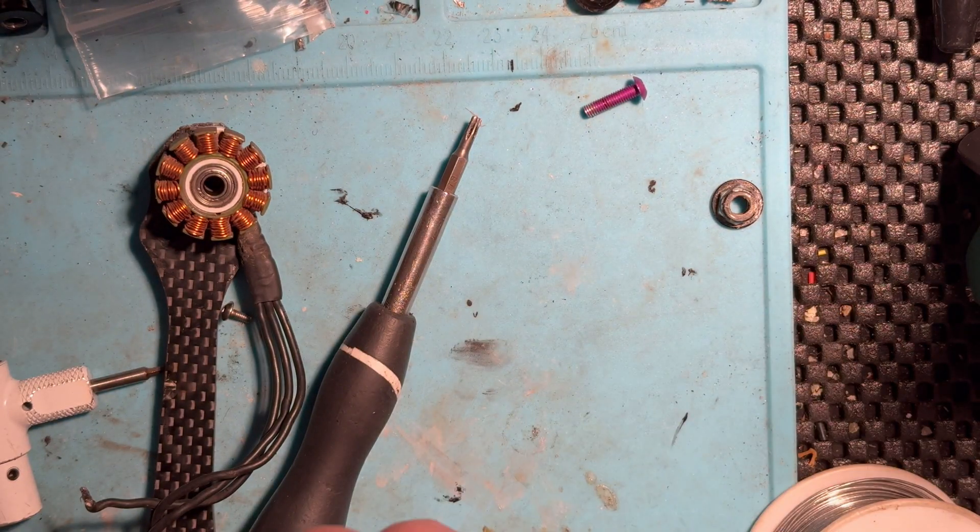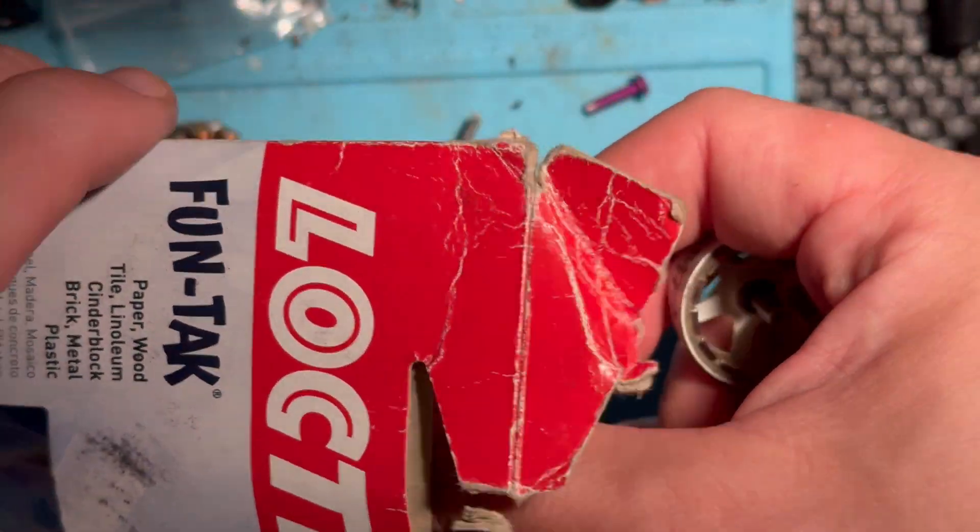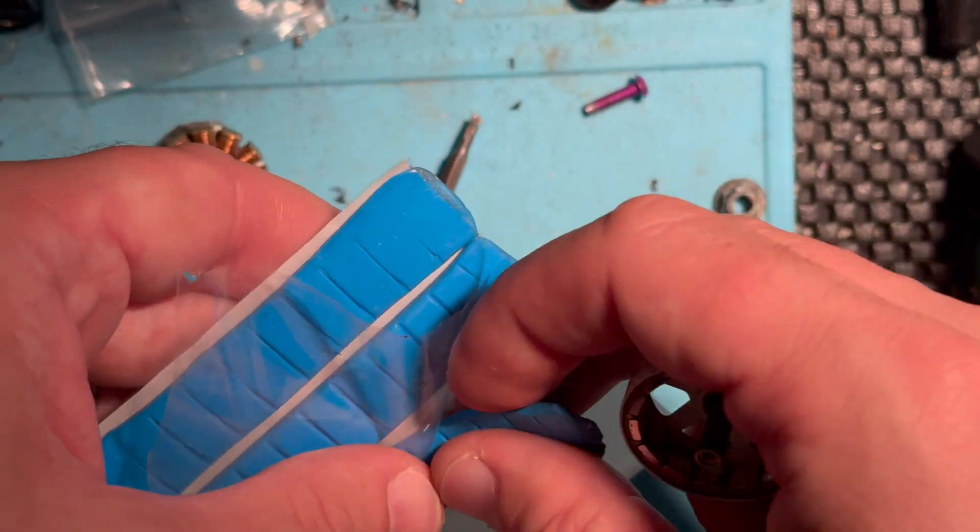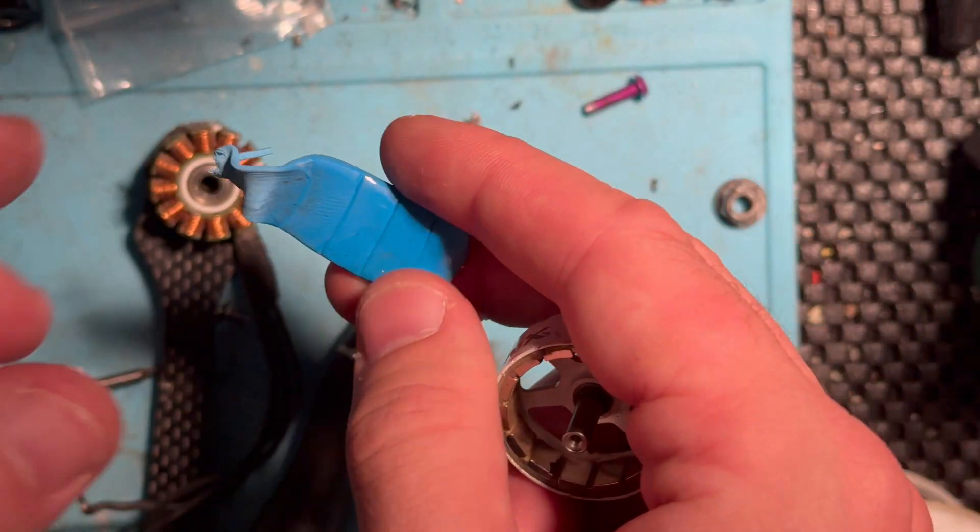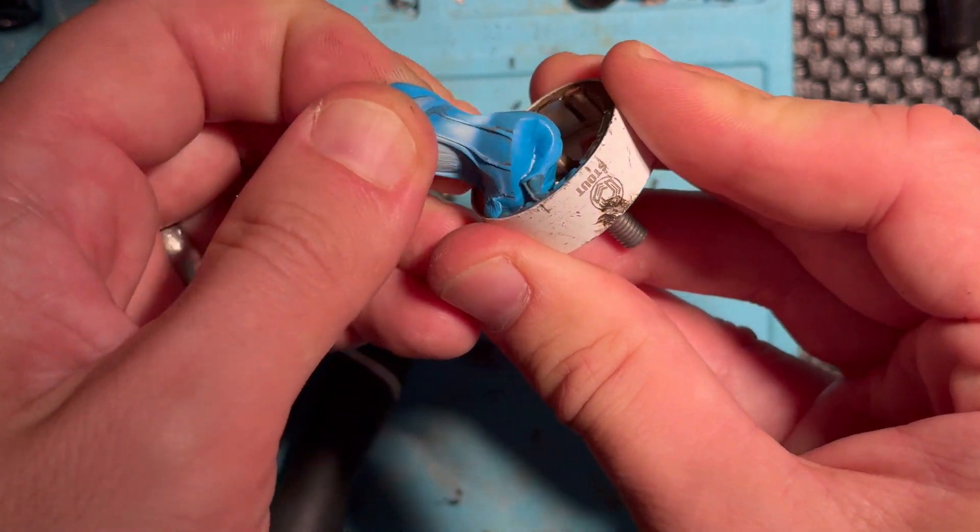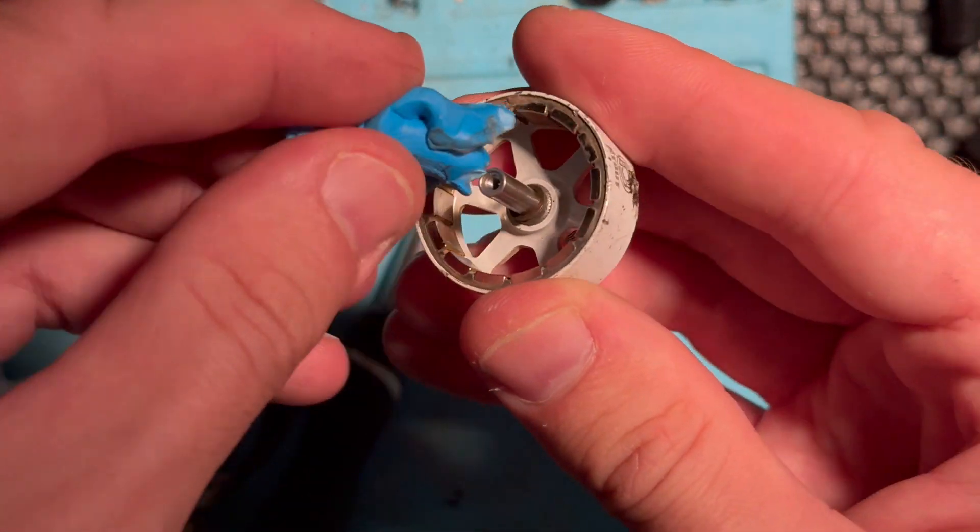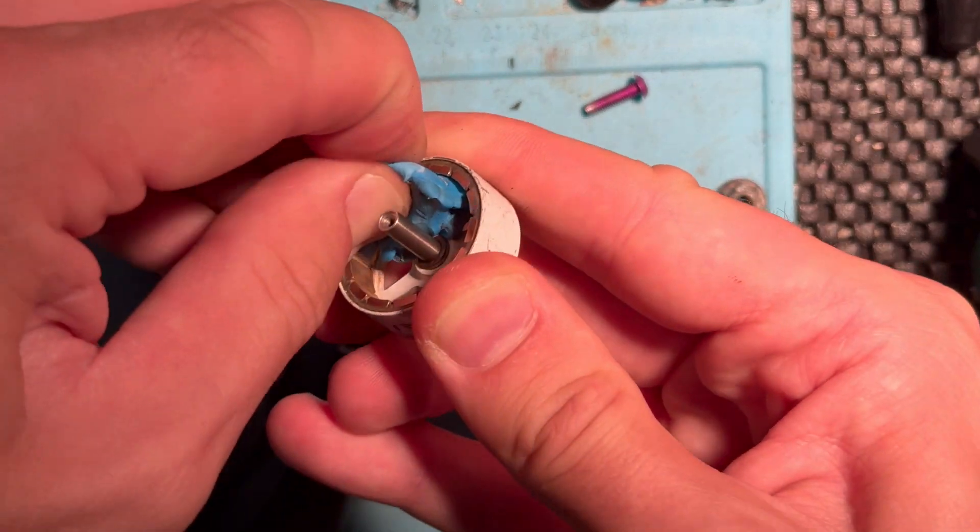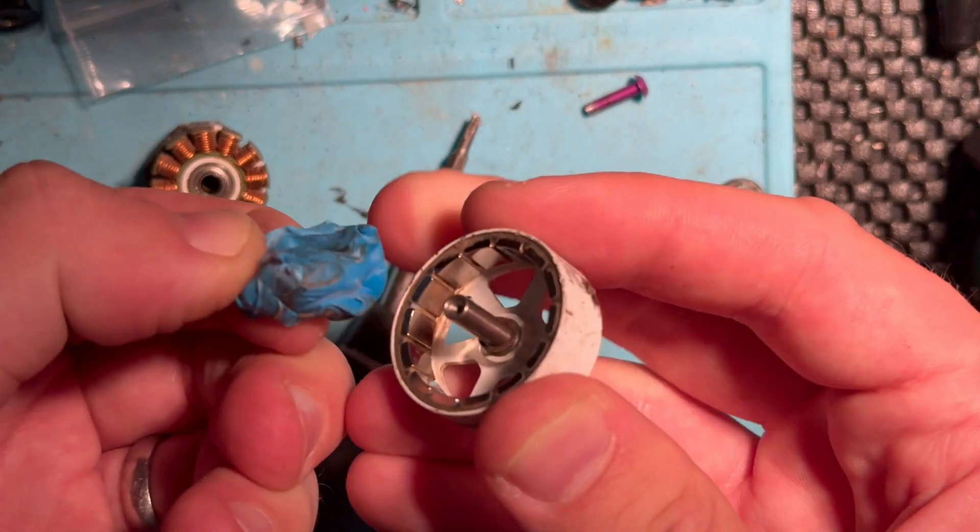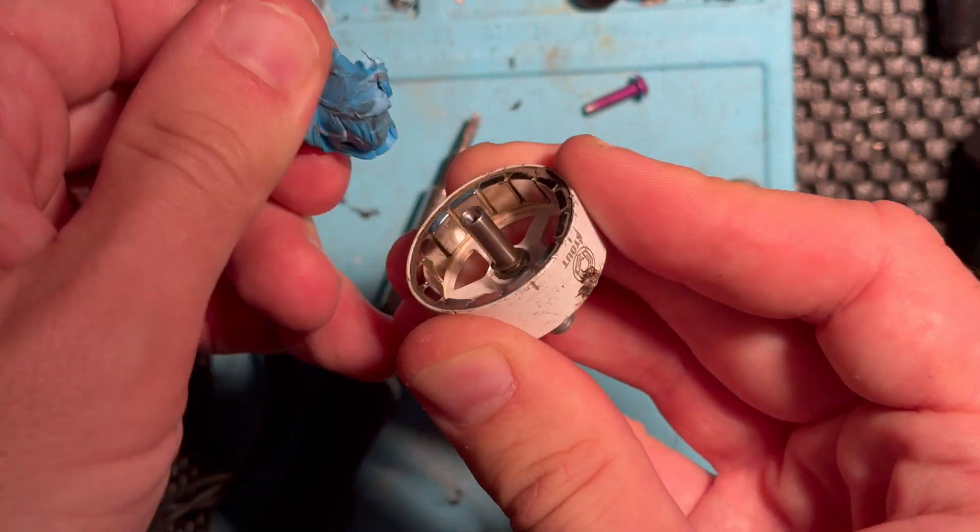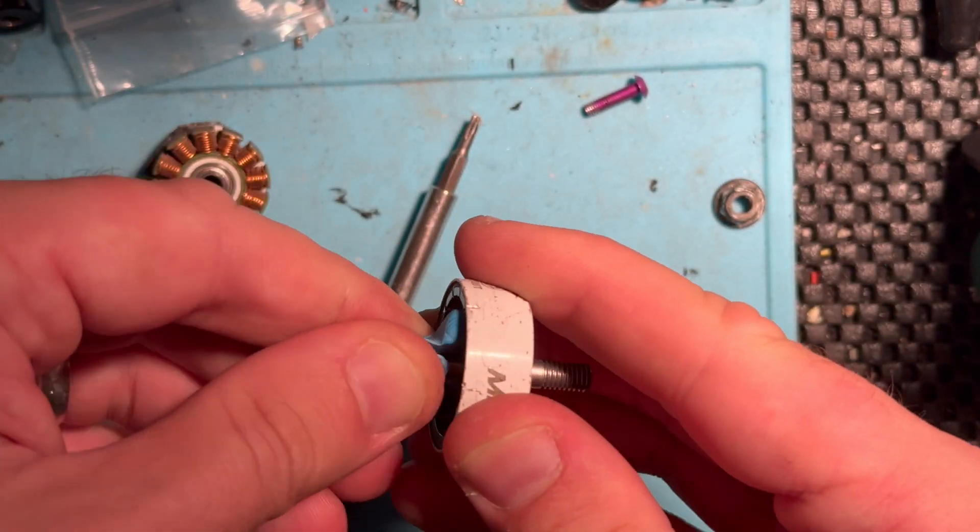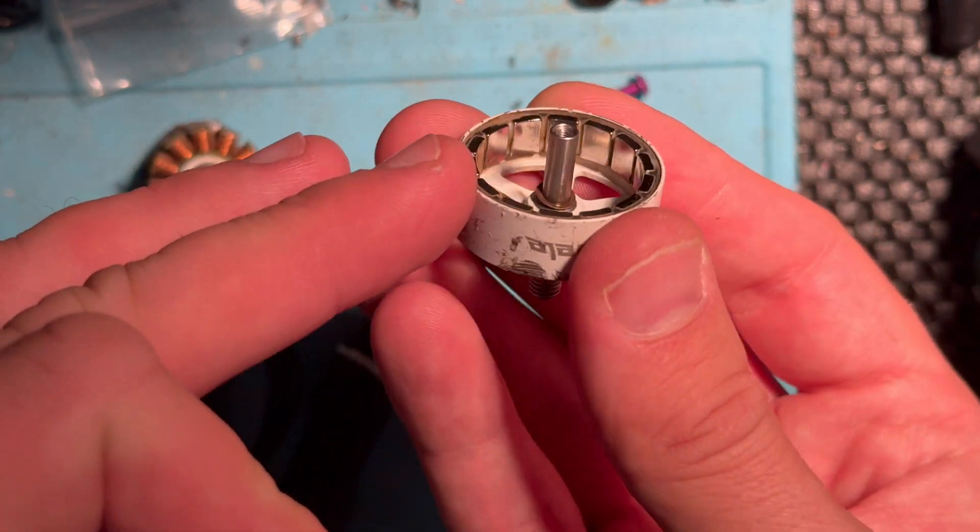So to get started, I recommend this Loctite Fun-Tak. Call it BluTac. Take a little bit of this. Shouldn't need much. And you're just going to mash this in. You can see it's already cleaning it. And that actually looks pretty good.